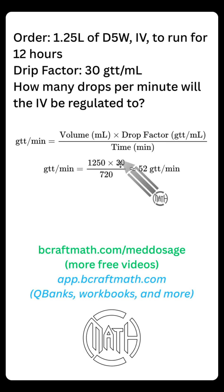The drop factor, 30 drops per milliliter, we're substituting that in, and this 720 represents 720 minutes, because this infusion is going to run for 12 hours. There's 60 minutes in one hour, 12 times 60 is 720.